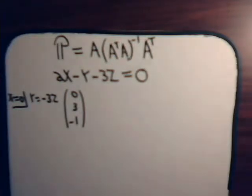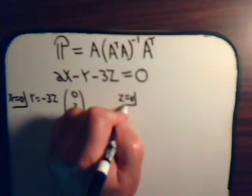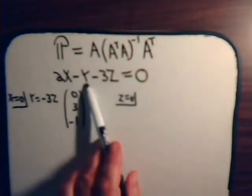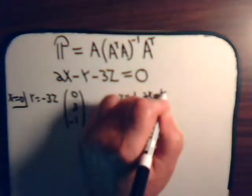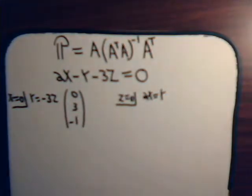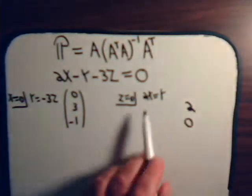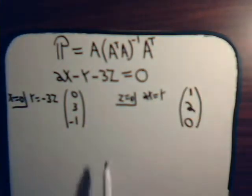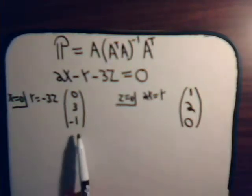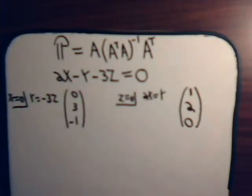To get a non-parallel vector, let's say Z is zero. Then we have 2X equals Y. A corresponding vector might be: Z is zero, let Y be two, then X would have to be one. This vector is in the plane. Clearly these two vectors are linearly independent — there's no number I can multiply one by to get the other. So we have a basis for the plane.